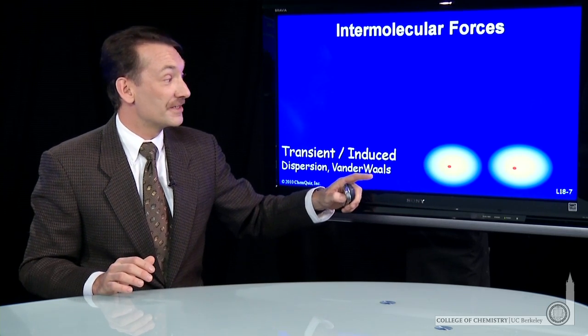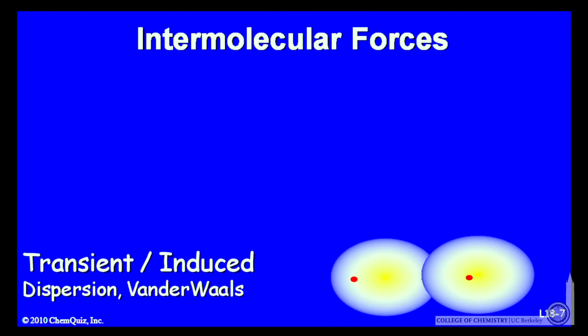They look like this. Here's relatively symmetric particles, but if there is a transient shift in the electronic cloud, that causes a little bit of a dipole moment and can induce dipole moments and, therefore, attractive forces between particles.